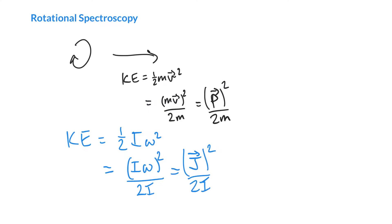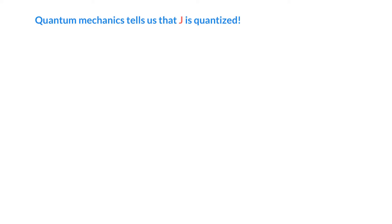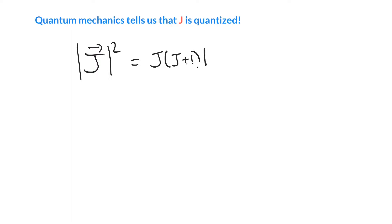We can see the correspondence: in linear motion, kinetic energy is p squared — linear momentum — over twice the mass. In the rotational world, it's the angular momentum squared over twice the moment of inertia. Those equations correspond pretty nicely. Here's where quantum mechanics comes in, because quantum mechanics tells us that j itself is quantized. So j squared is equal to — confusingly enough — a quantum number times that quantum number plus 1, times h-bar squared. That quantum number j is the rotational quantum number, and it takes values from 0 to infinity in steps of 1.